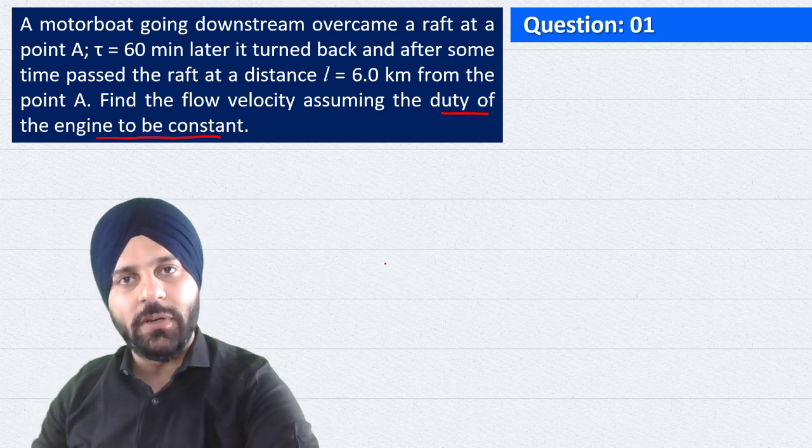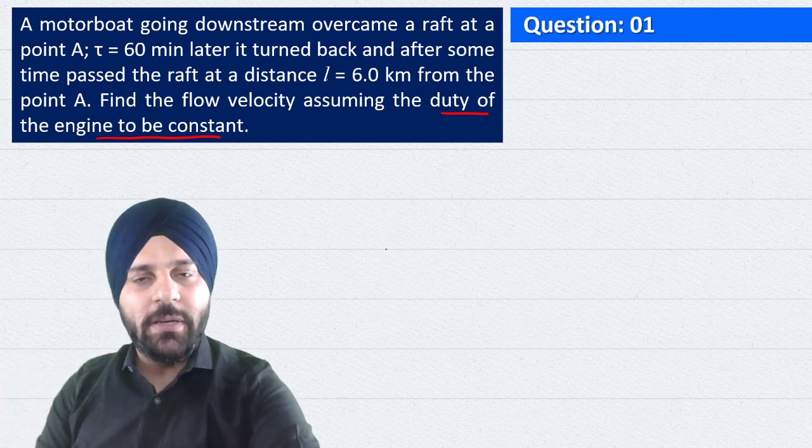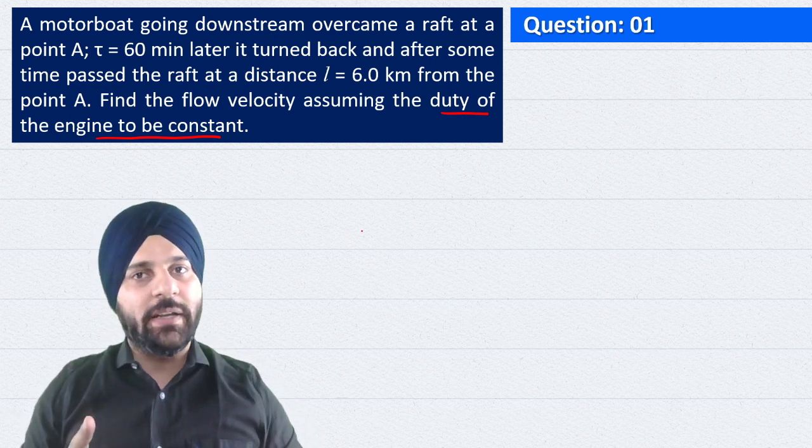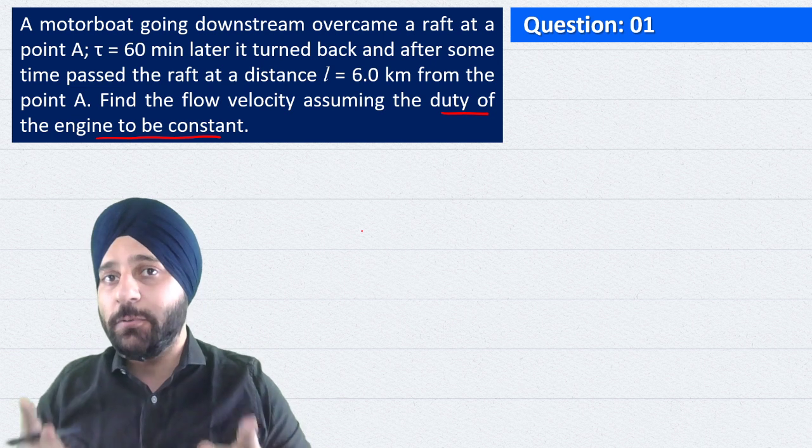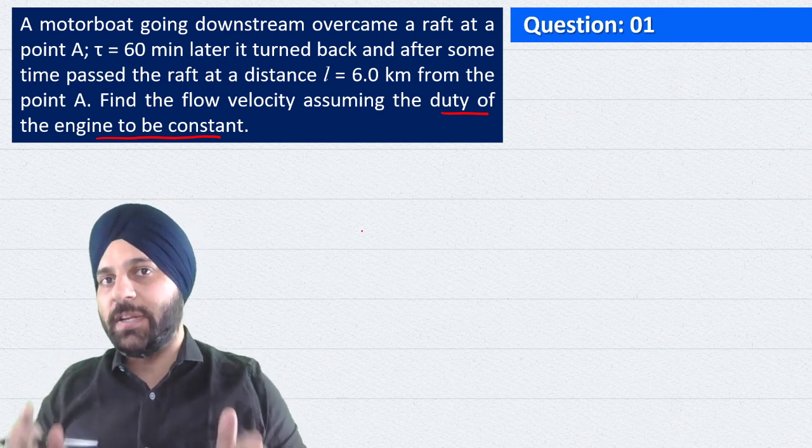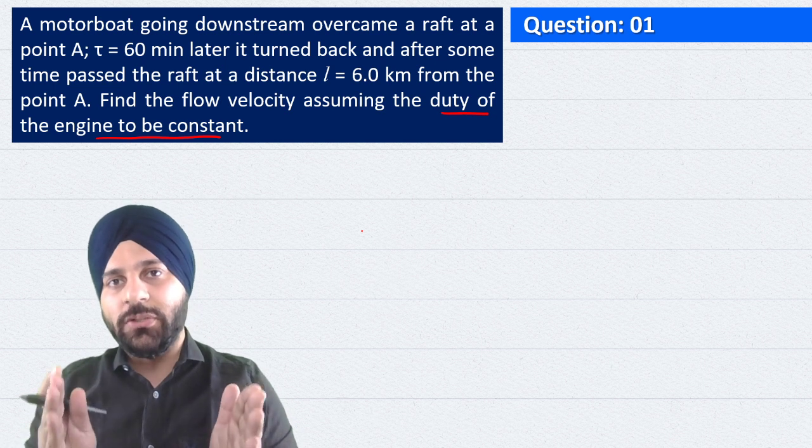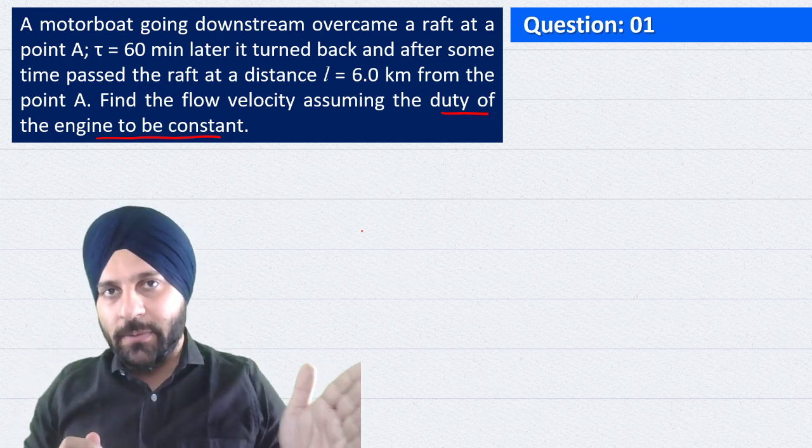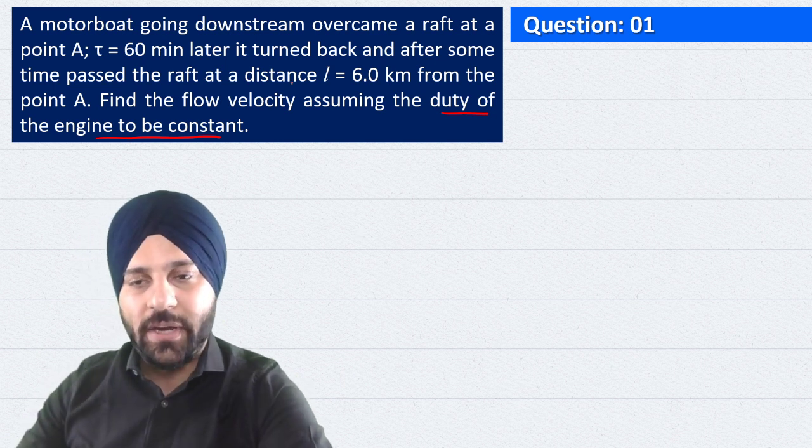To velocity of boat with respect to raft ya river downstream or upstream ke time pe kya rahegi? Same rahegi. Iska matlab kya hai? Ground ke respect me nahi, river ke respect me kya rahegi. River ke respect me jo boat ki speed hai wo same rahegi dono batao me. Kyunki river ke respect me hamari velocity jo agar hamne same mani hai, agar ham ground se observe karenge to downstream pe wo hume zyada nazar ati hai, upstream pe kam nazar ati hai. Ye baat aap jante hai.